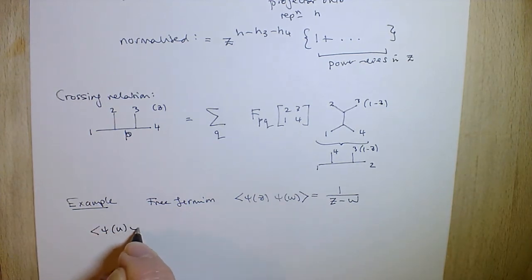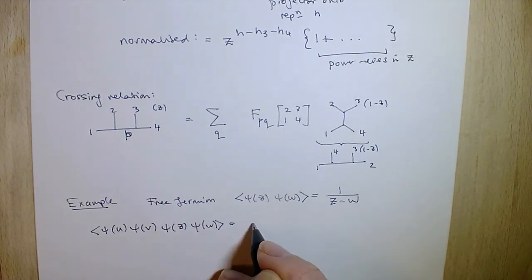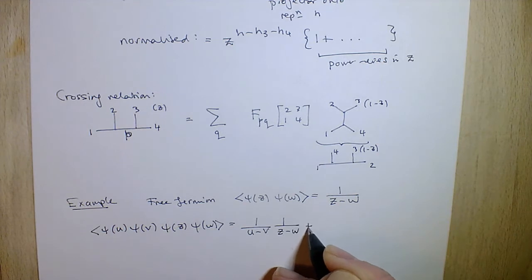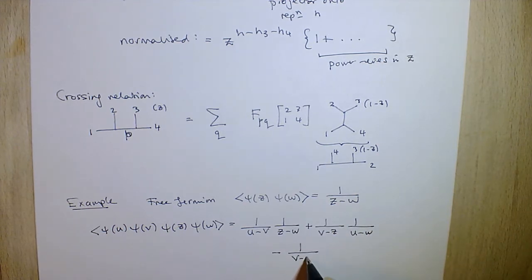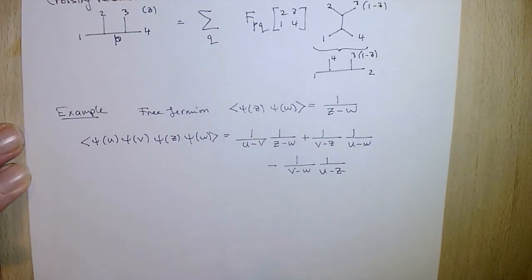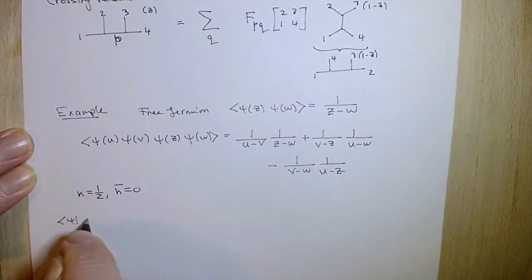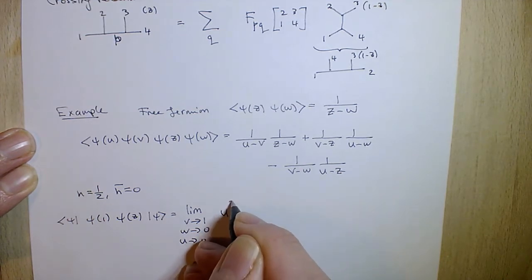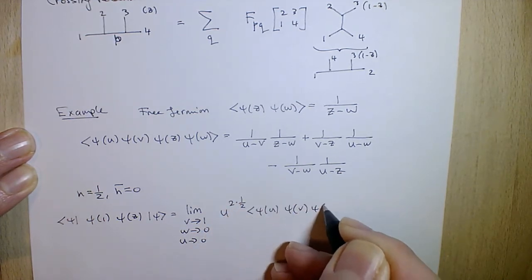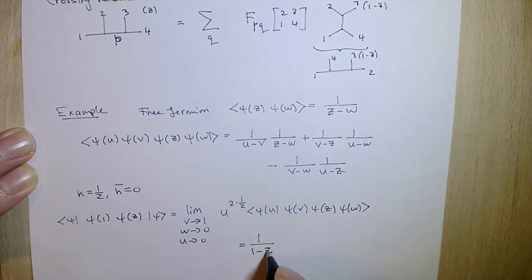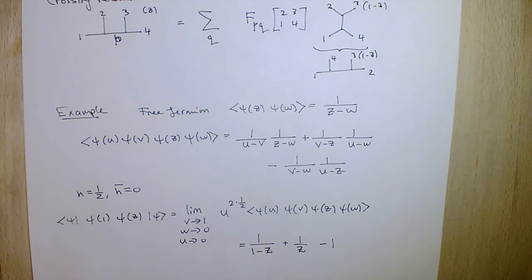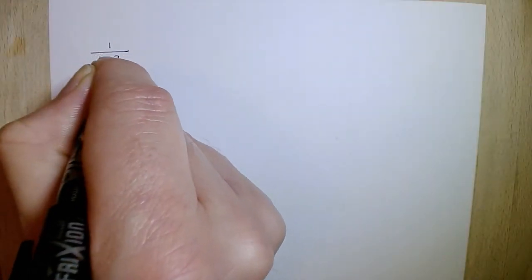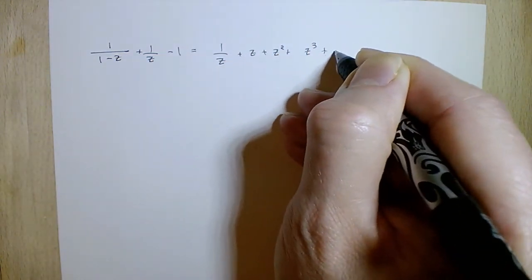The free fermion is the easiest example to work with. The two-point function of a massless free fermion is just 1/(z-w), and using Wick's theorem the four-point function is easy to work out. The field psi has h = 1/2, h-bar = 0. Mapping (infinity, 1, z, 0) gives the nice function 1/(1-z) + 1/(z-1). In series expansion that is a particularly simple form: 1/z + z + z^2 + z^3 ...